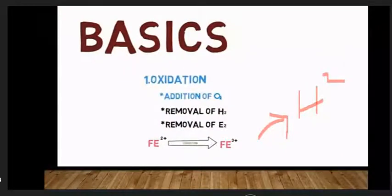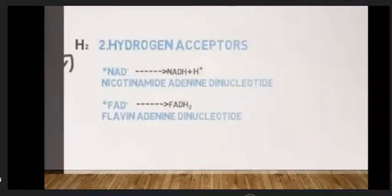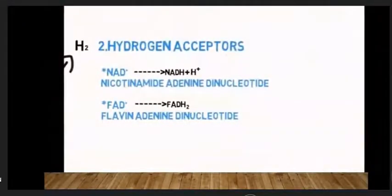First, let us go to the basics before the glycolysis cycle. First, oxidation. Oxidation means addition of oxygen, removal of hydrogen, and removal of electrons. For example, ferrous Fe2+ undergoes oxidation by removing hydrogen to become ferric Fe3+.